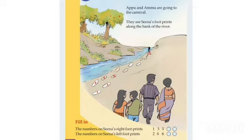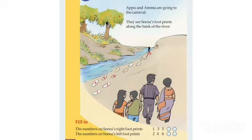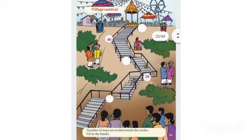We get each number by adding two, or we can say by skipping one number. Starting from 1, we skip the next number (2) and move to the alternate — that is 3. Likewise, we can find out the next term in the sequence. At last, they reached the village carnival.